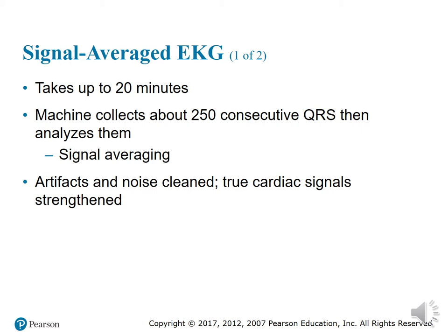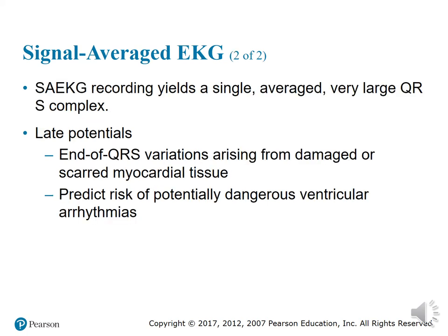Artifacts and noise are cleared to produce a true cardiac signal on the EKG. When doing an EKG, the machine can pick up different sounds — that's why it's important for patients not to have underwire in their bra, not to wear jewelry, and cell phones can't be in the area. The signal average EKG records a very large QRS complex. Late potentials typically show up at the end of the QRS complex and arise from damaged or scarred myocardial tissue. They can predict risk of potentially dangerous ventricular arrhythmias.